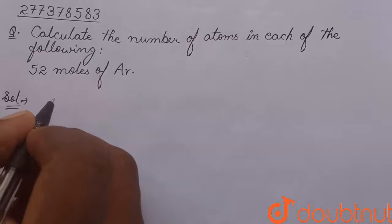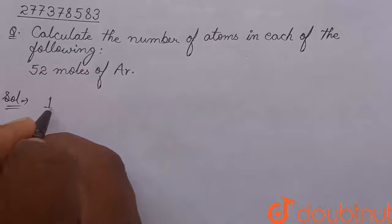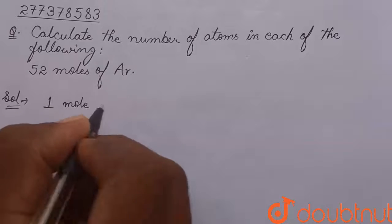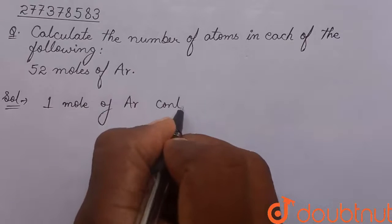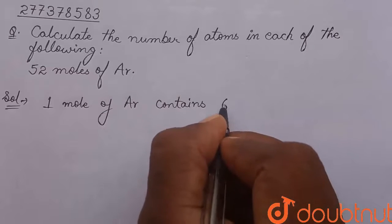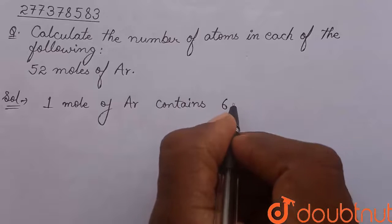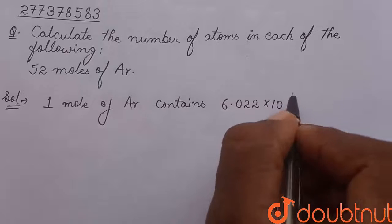So first, we will calculate the number of atoms in 1 mole of argon. We know 1 mole of argon contains Avogadro number of atoms of argon. So, Avogadro number is 6.022 x 10 to the power 23.